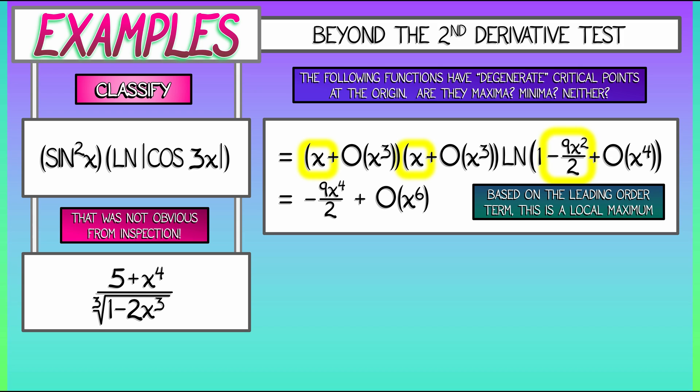What are we going to do with this at the origin? If I look at it, if I consider that numerator 5 plus x to the fourth, I would guess that I have a degenerate critical point at the origin, and it's going to be like a local minimum, because I've got that positive fourth derivative with that x to the fourth term. But then I'm dividing by this cube root of stuff, and I don't know what that's going to do to it. How are we going to deal with that? We can use the binomial series for that denominator, since that's really quantity 1 minus 2x cubed to the negative one-third power.